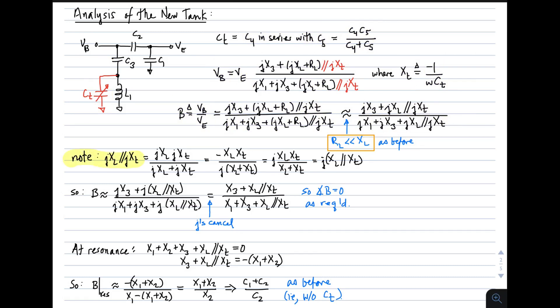Now in this case, we can simplify. First, note that if you take the parallel combination of two impedances that are purely reactive, you get the parallel combination of those reactances with a J out in front. Now we can use that to come up with this modified expression for B. We note that the J's cancel in the numerator and denominator, so we end up with this expression, confirming that the phase of B equals zero, as is required by the Barkhausen phase criterion.